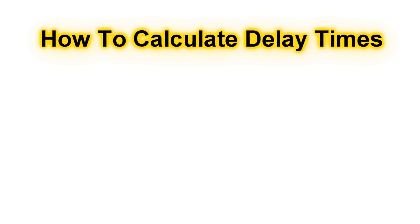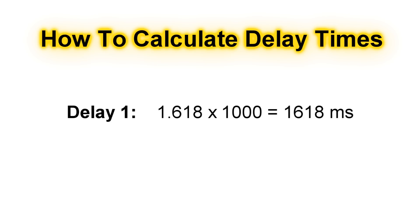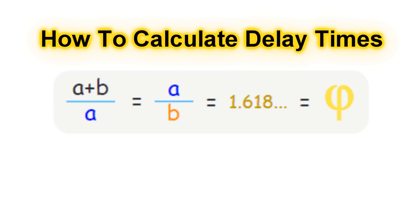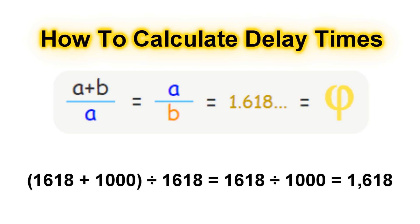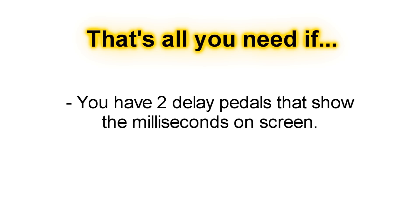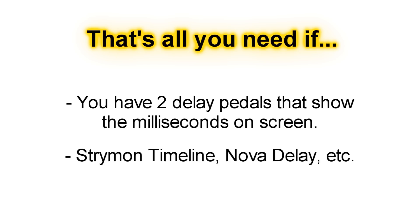The simplest way to calculate the time for both delays is to take the value of 1.618 times a thousand, so delay one will be 1618 milliseconds and our second delay will be 1000 milliseconds. If we apply the formula (a + b) / a = a / b, it's going to equal 1.618 for both. That's all you need if you have two delay pedals that show milliseconds on screen — like a Strymon Timeline or a Nova delay — you could just put the milliseconds needed on both pedals and you'd have your golden ratio.